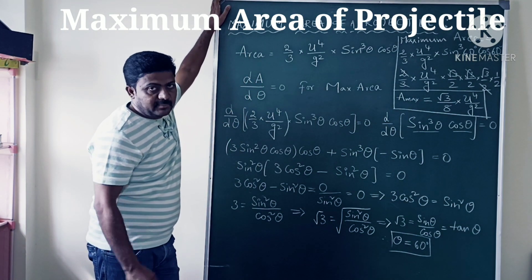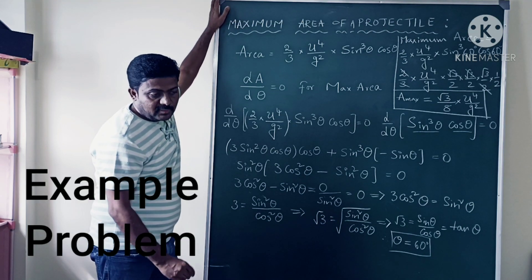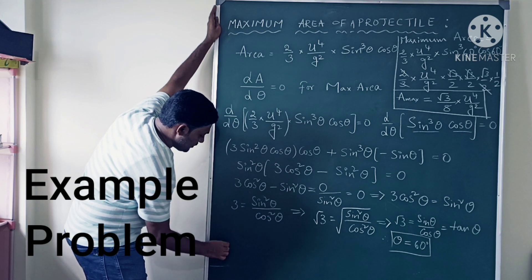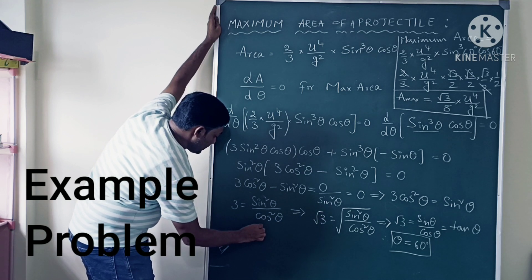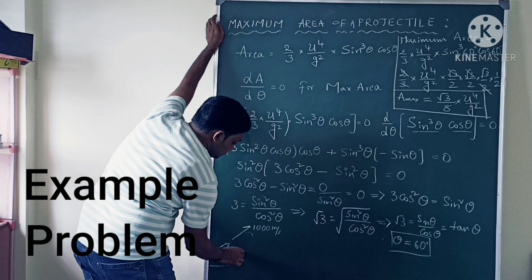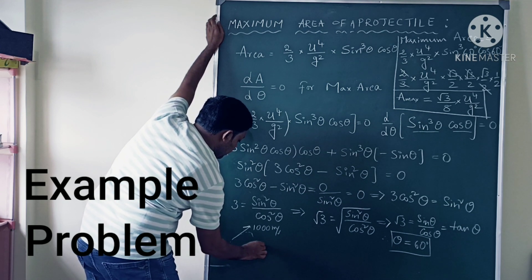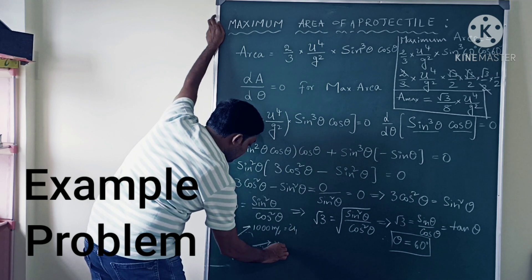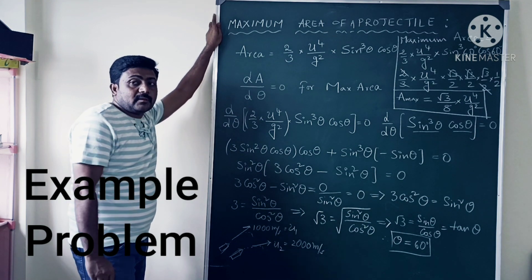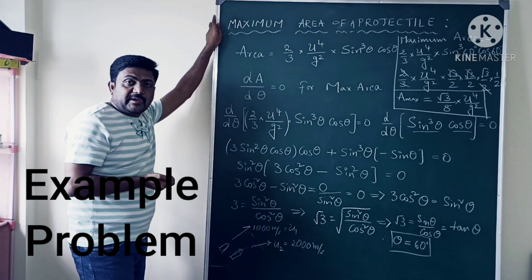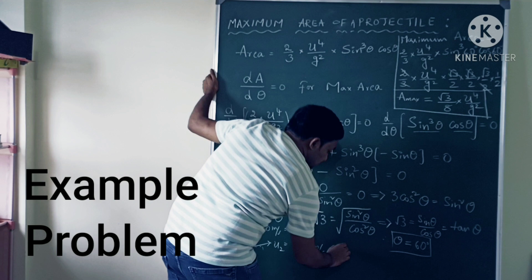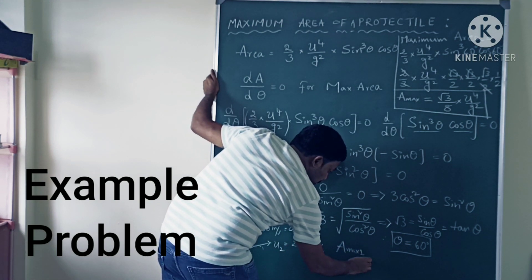A problem from a previous JEE exam: two bullets are fired from a gun with different velocities. Bullet 1 is fired with velocity u₁ = 1000 m/s, and bullet 2 is fired with velocity u₂ = 2000 m/s. When a bullet is fired from a gun it behaves like a projectile. We need to find the ratio of the maximum area covered by bullet 1 to bullet 2.